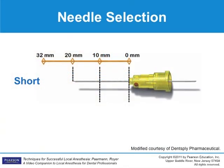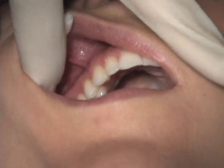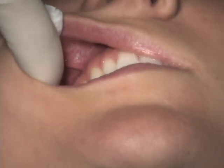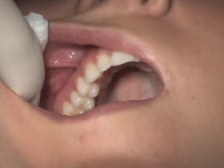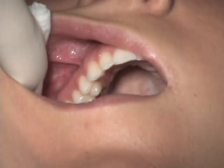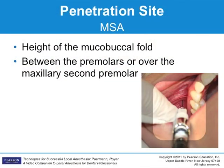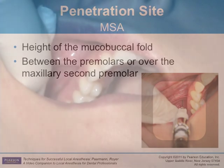A 25, 27, or 30 gauge short needle works well for this injection. To gain access to the site of penetration, gently retract the tissue, pulling the tissues taut while lifting the tissue away from the maxilla. The penetration site is at the height of the mucobuccal fold over the maxillary second premolar.